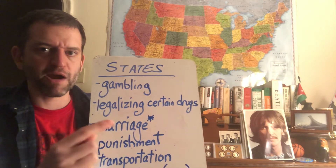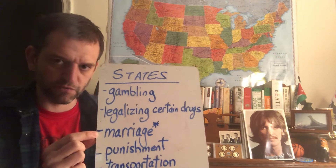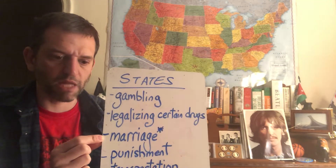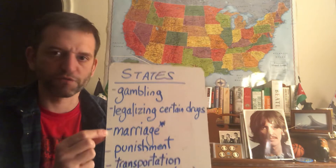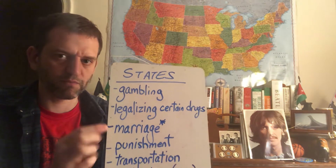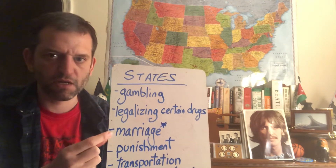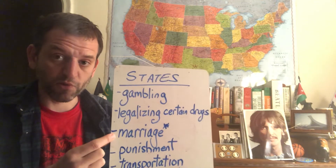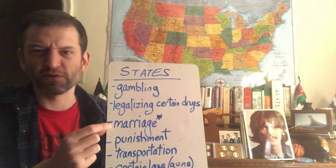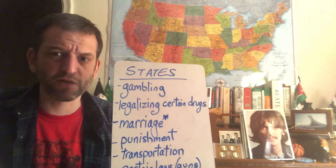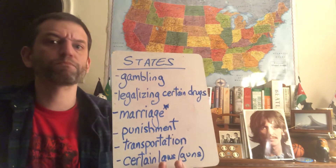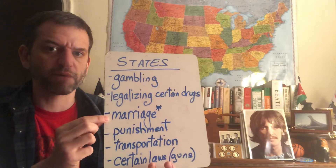Marriage — I put an asterisk because this has changed in recent years. Certain states used to have laws saying blacks and whites could not marry each other. Well, the federal government — the Supreme Court — stepped in, and in 1967 they said that's not constitutional, so that is no longer up to the states. The same thing happened with gay marriage; the Supreme Court stepped in and said you cannot regulate that, so it is open to all 50 states. There are other certain types of marriages that states still decide on, so there's still some power states have in this area.